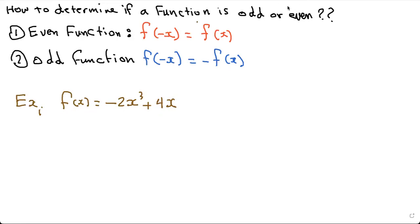Our lesson today is to determine if a function is odd or even. We have two conditions: for an even function, f of negative x will equal f of x. For an odd function, f of negative x equals negative f of x. That's how you determine if a function is odd or even.